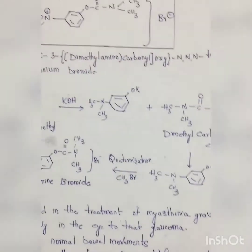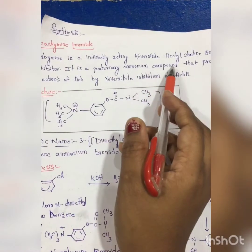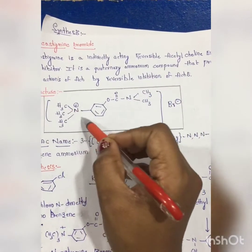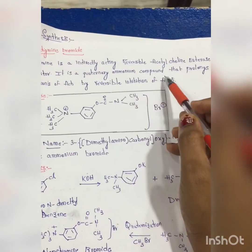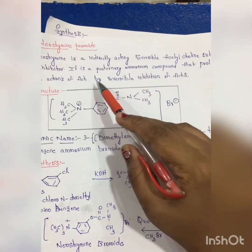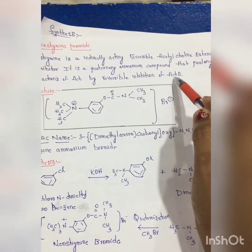Neostigmine is an indirectly acting reversible acetylcholinesterase inhibitor. It is a quaternary ammonium compound - it has three methyl groups and a positive charge. It's a quaternary ammonium compound that prolongs the actions of acetylcholine by reversible inhibition of acetylcholinesterase.